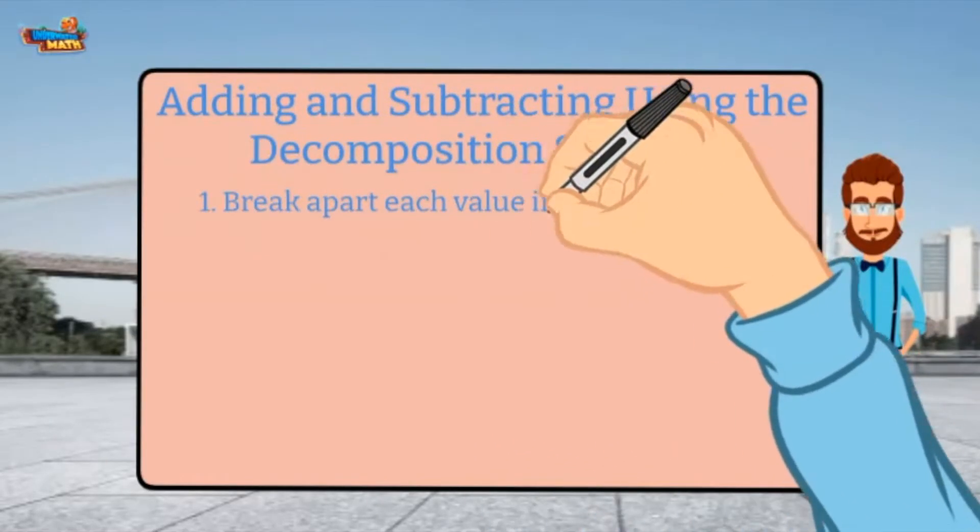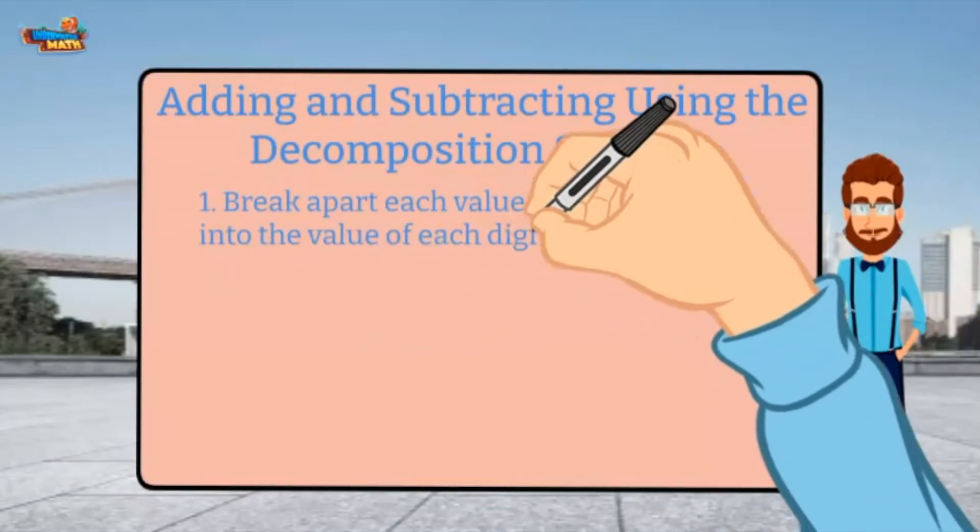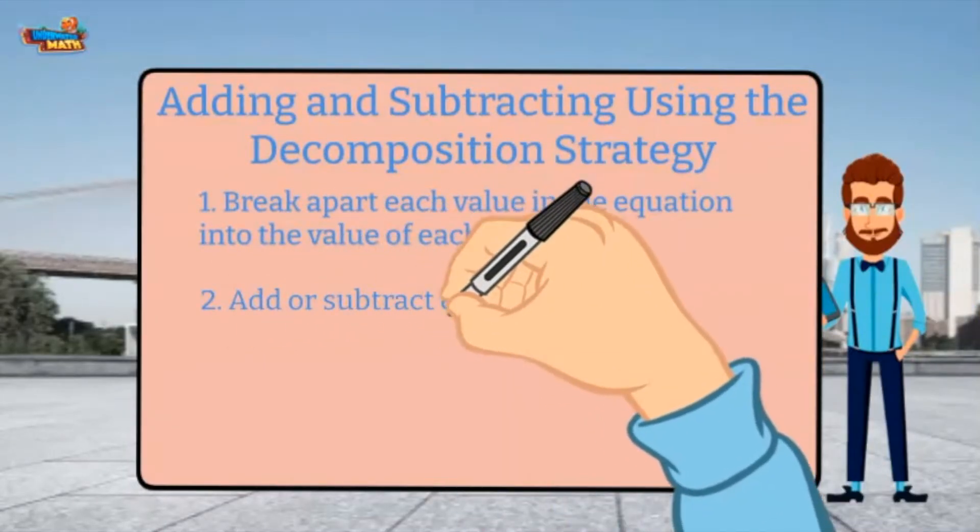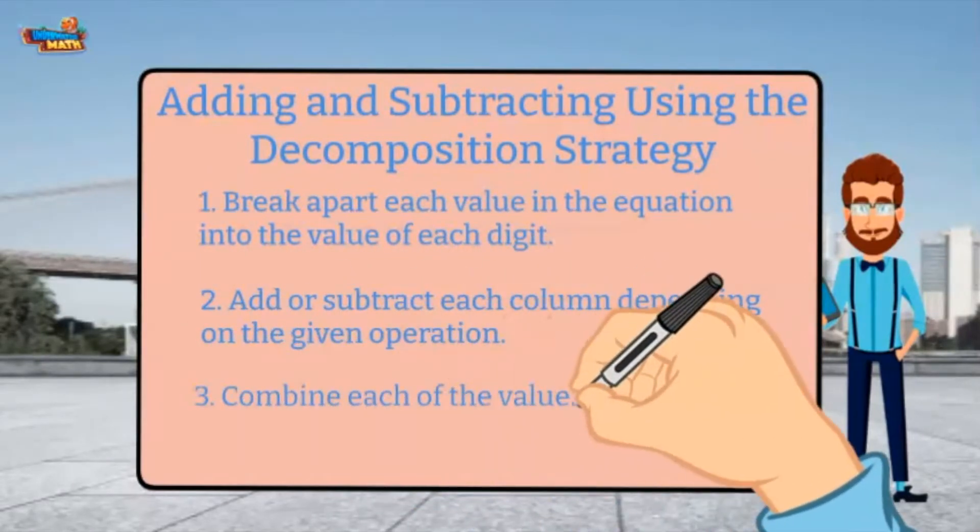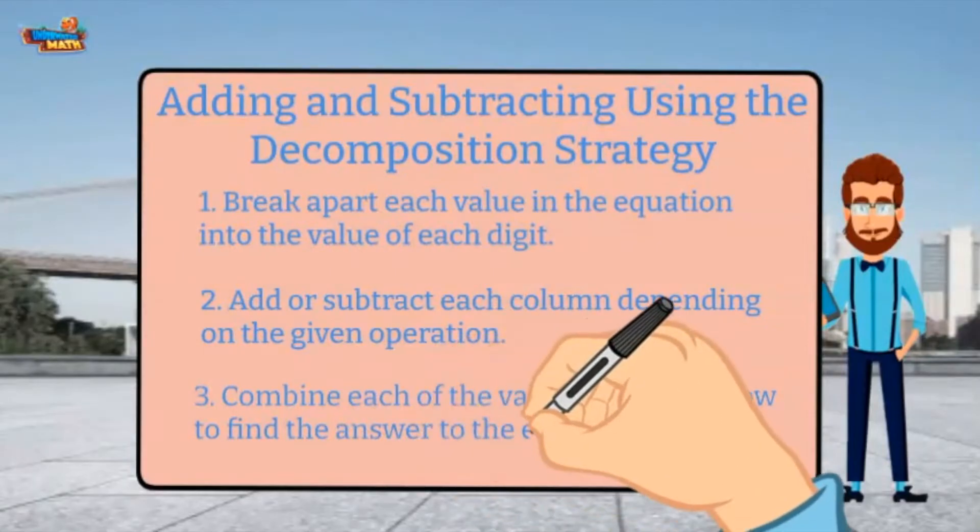First, break apart each value in the equation into the value of each digit. Next, add or subtract each column depending on the given operation. Finally, combine each of the values in the last row to find the answer to the equation.